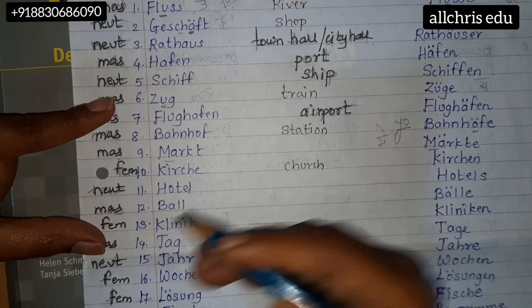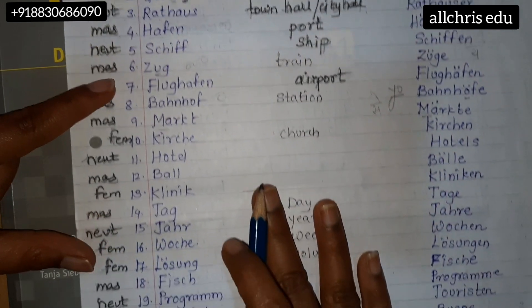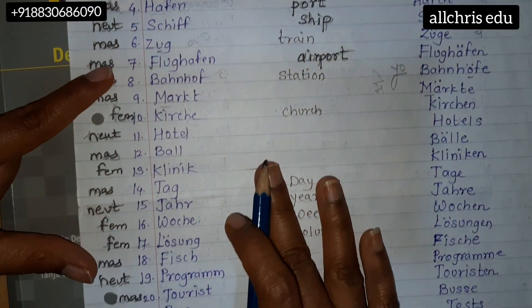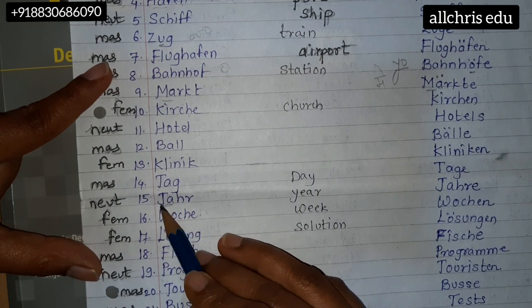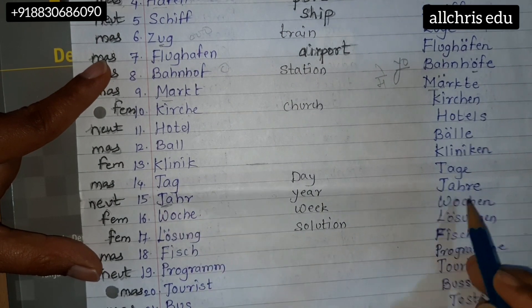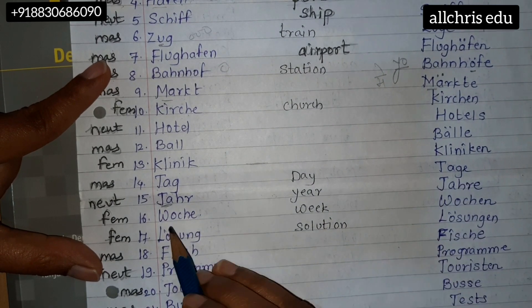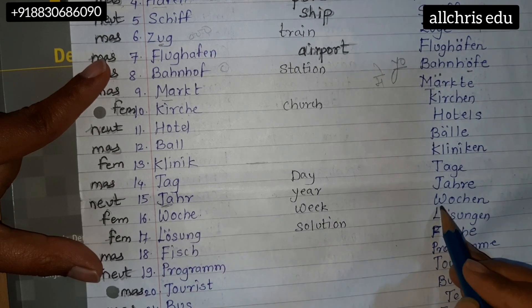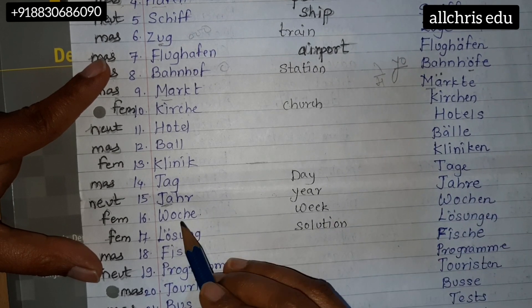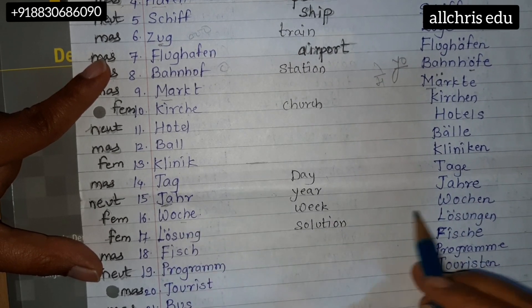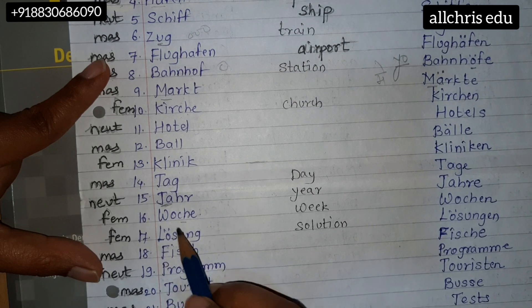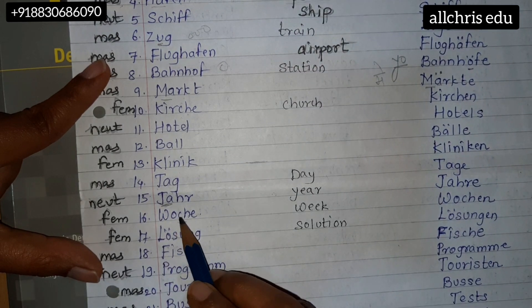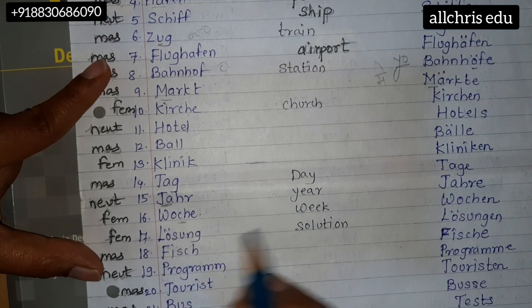Jahr — 'y' sound, okay. Jahr, Jahre. Wohnung, Wohnungen — underline 'ch' on both sides and write 'kh'. Wohnung, Wohnungen.